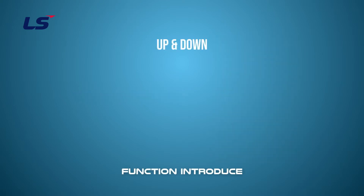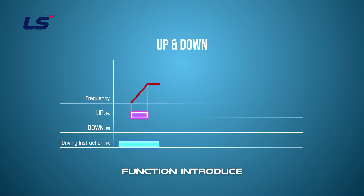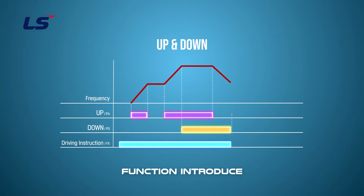The Up-Down operation is a function that enables the frequency reference to be set by multi-function digital inputs. After programming the two multi-function digital inputs to Up and Down respectively, the Run command must be applied, and the frequency reference can be increased or decreased only while the multi-function digital input is on, whether it is Up or Down.